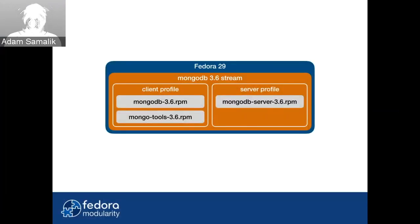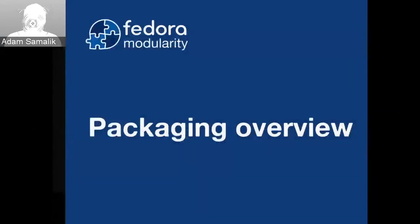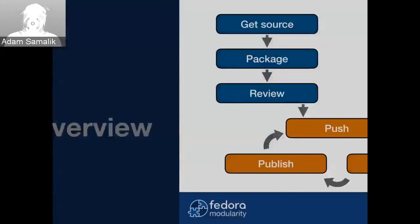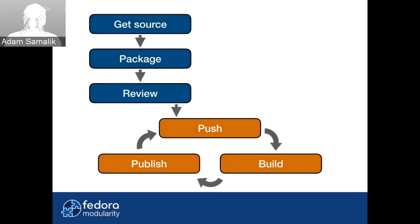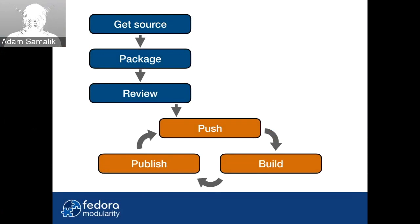That was how modularity works for users. Now let's look at packaging. This is a simplified view of the packaging process for traditional packages — basically six steps: three you do once and three you continue doing mostly forever. You get the source, package it, send it for review, then push it to dist-git, build it, publish it, and people can use it. For updates, you push, build, and publish again, on and on. With modularity, we change those recurring steps and add one new step: defining the module, which you do just once.